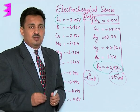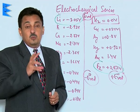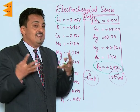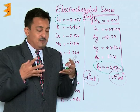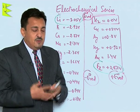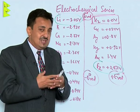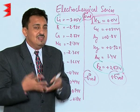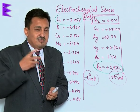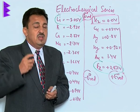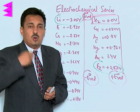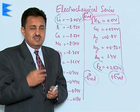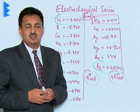Another important application is that we can select any two electrodes from the series and construct a galvanic cell, since their potentials will not be the same. Connecting any two electrodes gives a galvanic cell that has a spontaneous redox reaction, which is converted into electrical energy.